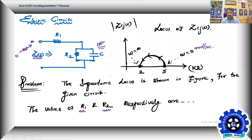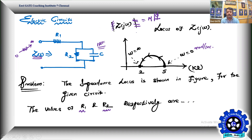Impedance locus means it is not just the magnitude — it is actually a polar coordinate, so it is going to have both magnitude and phase angle. So it is M angle phi. That is important: the locus has a magnitude and phase angle.